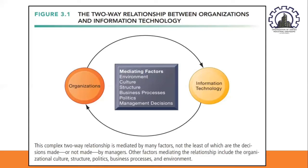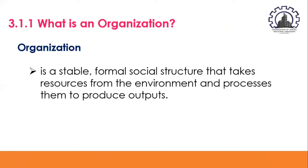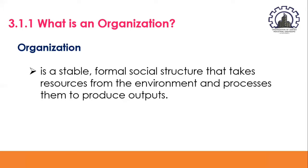In order to better understand what an organization is, let us discuss the key subtopic. An organization is a stable, formal social structure that takes resources from the environment and processes them to produce output. As shown in Figure 3.2, the technical microeconomic definition focuses on three elements: capital and labor are primary production factors provided by the environment; the organization transforms these inputs into products and services; and the products and services are consumed by environments in return for supply inputs.